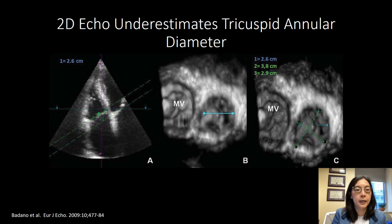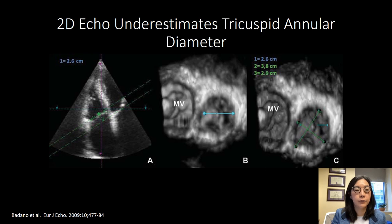3D has also improved our understanding of how much we underestimate tricuspid annular measurements from a four-chamber view. Typically these measurements are done in the OR to decide whether or not the tricuspid valve should be repaired at the time of mitral valve surgery, regardless of the amount of tricuspid regurgitation present. Here you can see that a four-chamber view and the 3D cut plane matching that view are not cutting at the longest dimension of the tricuspid annulus, and so we're underestimating how big it actually is.